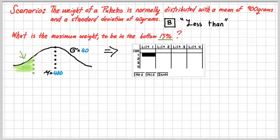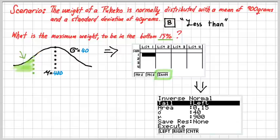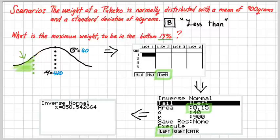Equivalently, we can use our graphics calculator. Again, select the inverse normal function. This time, selecting the left tail, entering 0.15. Our mean and standard deviation are as before. And there is our answer there, of 859 grams. That's rounded for you.